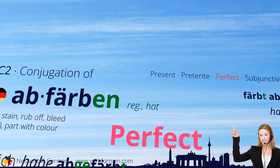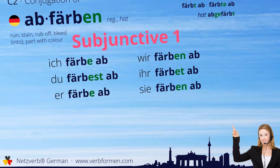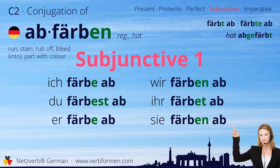Next up is the subjunctive one. Ich färbe ab. Du färbest ab. Er färbe ab. Wir färben ab. Ihr färbt ab. Sie färben ab.